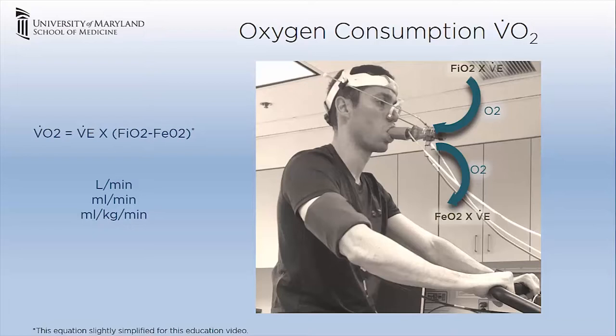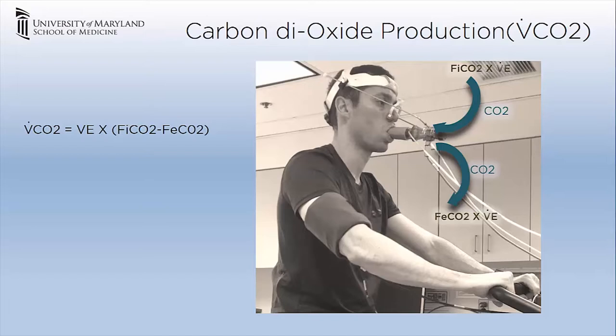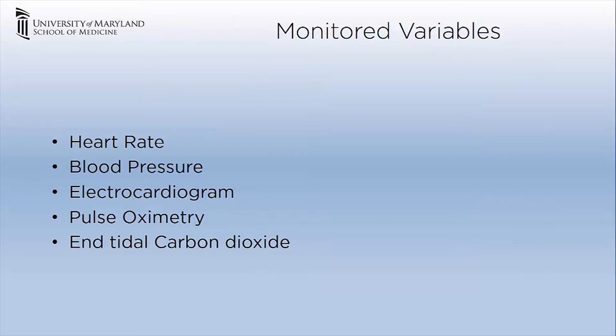Similarly, we can calculate carbon dioxide production from FiCO2, which is usually negligible, FeCO2, and minute ventilation. It is important to note that FeCO2 is not the same as end-tidal carbon dioxide. FeCO2 is the concentration of carbon dioxide in the total expired gas, whereas end-tidal carbon dioxide concentration is measured at the end of expiration. The other variables monitored during CPET are heart rate, blood pressure, electrocardiogram, pulse oximetry, and end-tidal carbon dioxide.